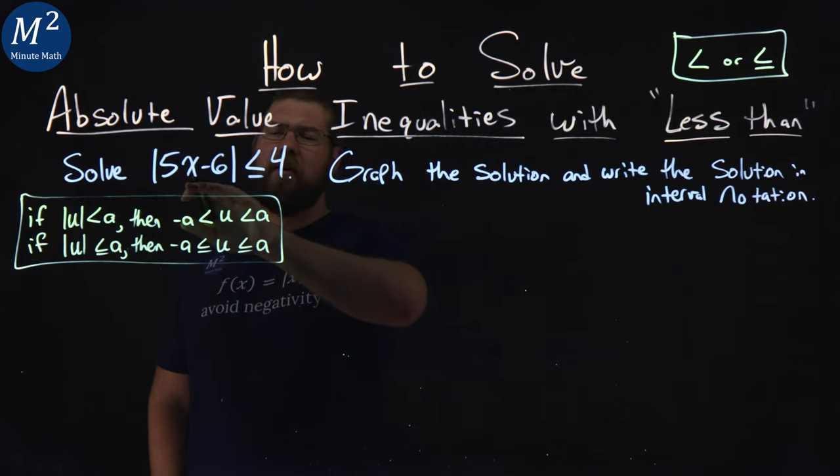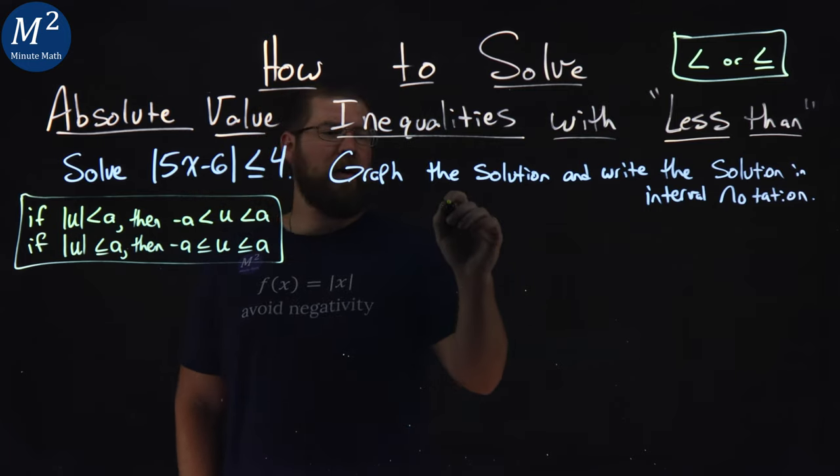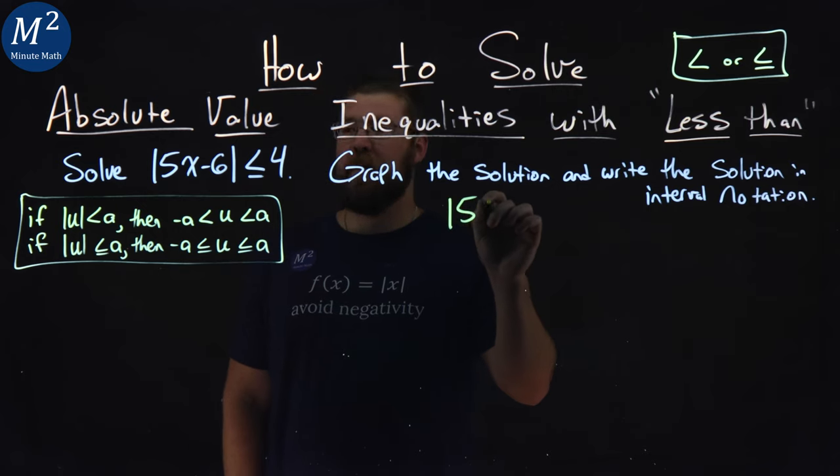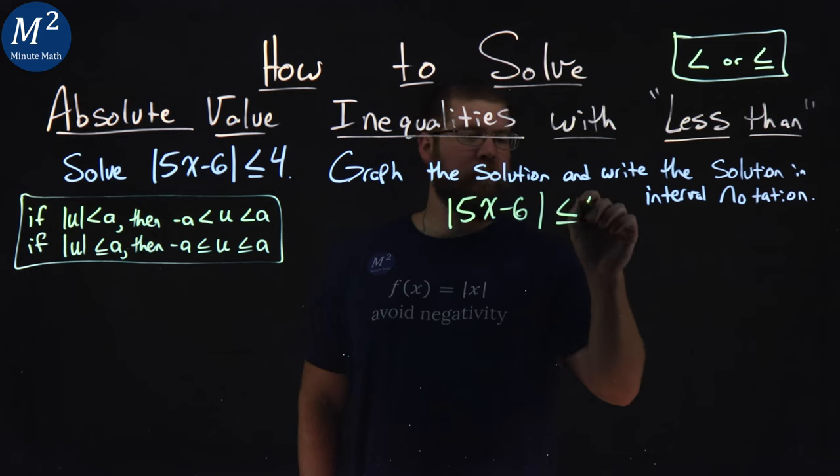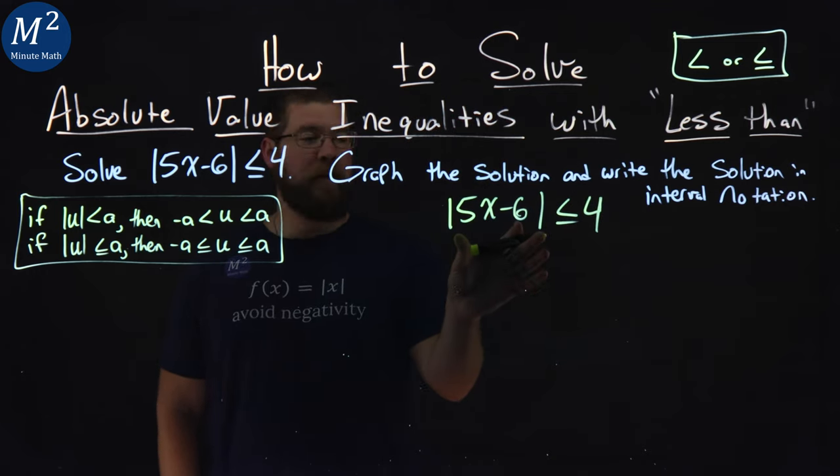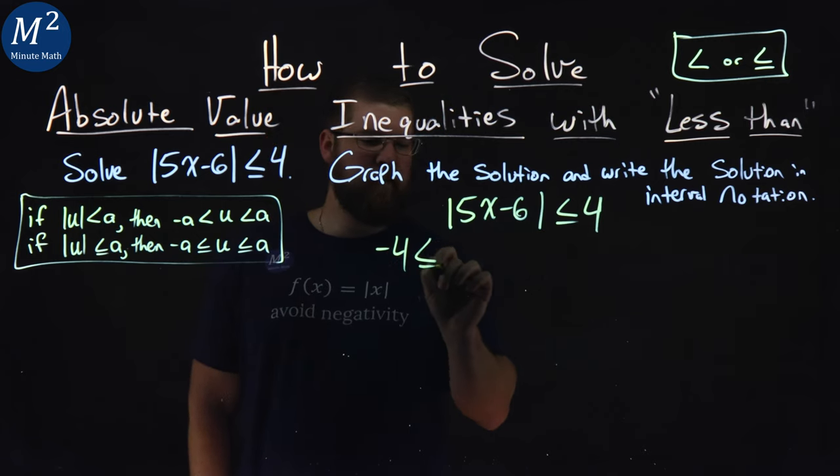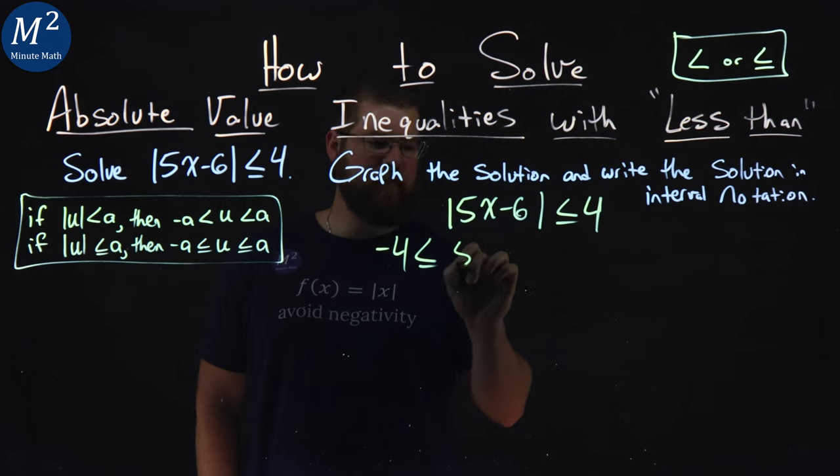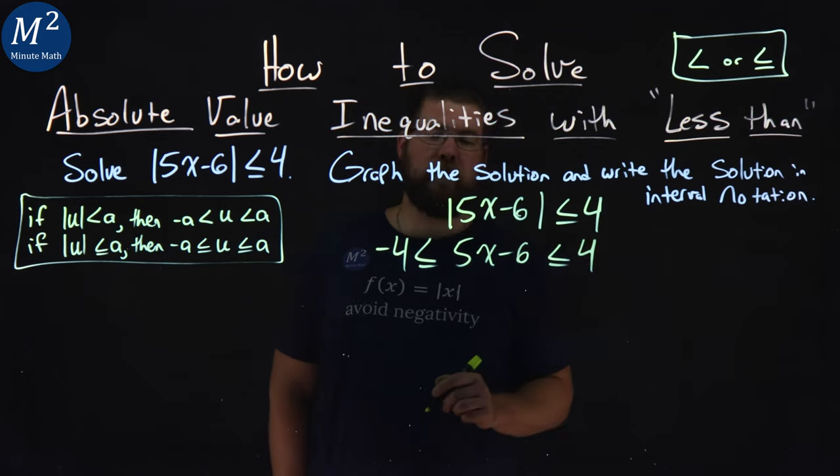So let's start with our inequality here and apply that rule. We have the absolute value of 5x minus 6 is less than or equal to 4. Our rule says, since we have the absolute value by itself, that's like our u value and our a value is the 4. So negative 4 is less than or equal to everything on the inside, 5x minus 6, which is less than or equal to positive 4.